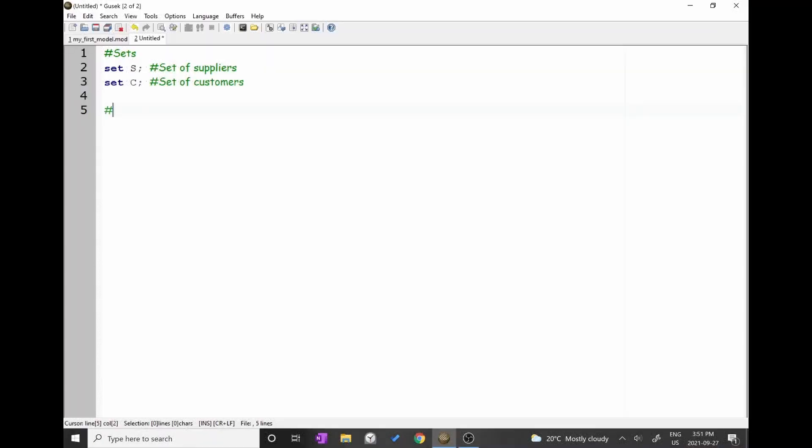Let's start declaring parameter P, index i, j. Type param p, then keys followed by i in set s, comma j in set c. Close the keys and add a semicolon. The reason why we declare i in set s, comma j in set c is that the parameter P has two indexes, i and j. The next parameter is cap. Type param cap keys i in set s. Close keys and add a semicolon. Then add parameter d. Type param d keys j in set c. Close keys and add a semicolon.